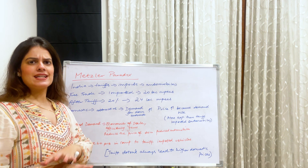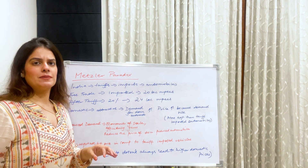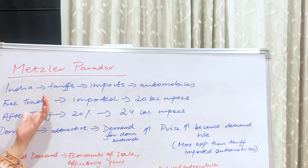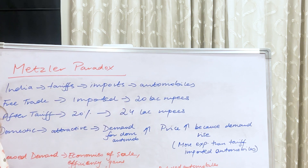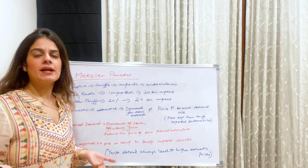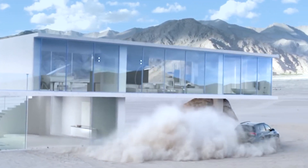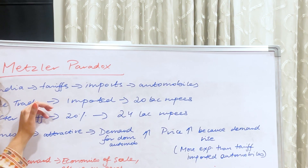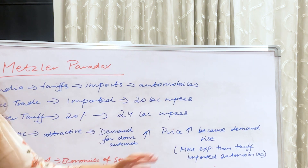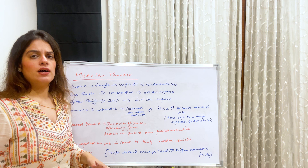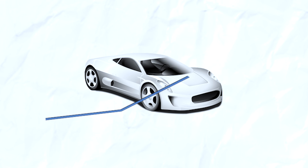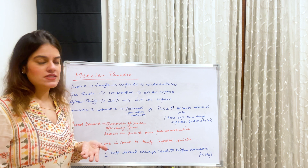Let's take an example of India, where tariffs have been imposed on imports — say, imports of automobiles. Take a brand like Kia: Kia is a South Korean brand and we import Kia cars. Initially, under free trade with no tariff, a car used to cost 20 lakh rupees. Now India has put tariffs and after the tariffs, we see a 20% hike in the price of the car — from 20 lakh it has become 22 lakh rupees. So of course it is now much more expensive than it was earlier.